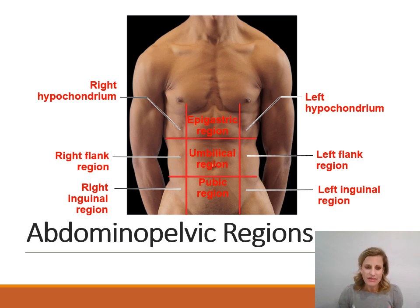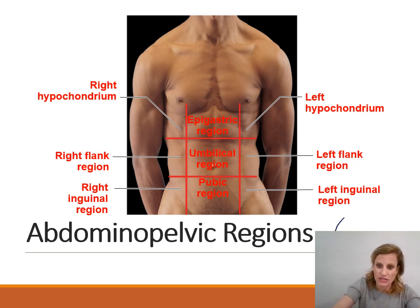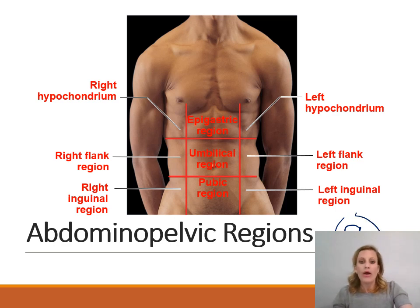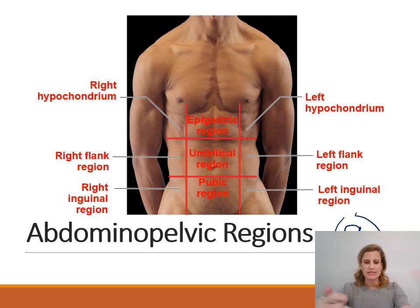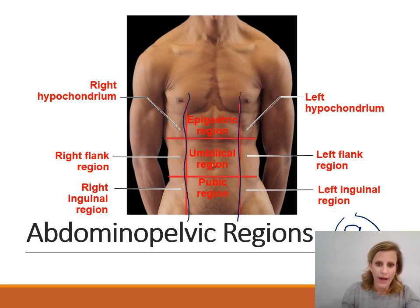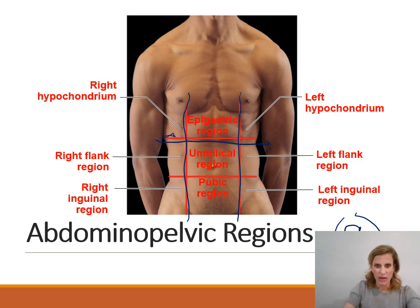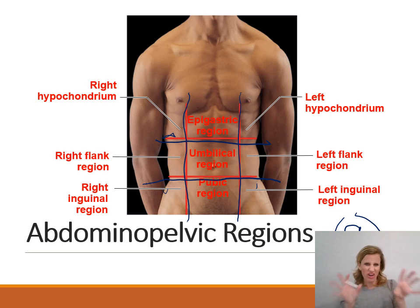We can also divide the abdominal pelvic region up into nine abdominal pelvic regions. In order to do this, we just draw a tic-tac-toe board across the abdomen. The vertical lines go just medial to the nipples, and the horizontal lines go just under the ribs — at the bottom of the rib cage — and then just above the pelvic bones or hips. That will roughly give you the abdominal pelvic regions.